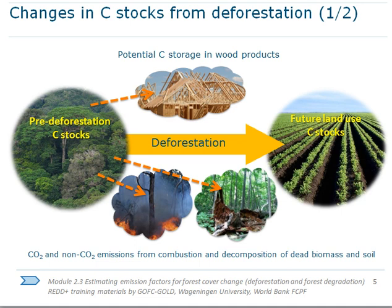An emission factor consists in the change of carbon stocks due to a certain activity, and it is expressed in units of CO2 emitted to the atmosphere or absorbed from it. In the case of deforestation, a certain amount of carbon stored in the forest is lost — either released to the atmosphere due to decay or combustion from fires, or stored for a time in harvested wood products and released only when those products decay.